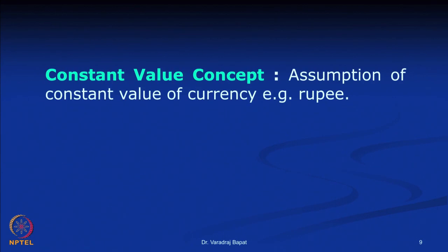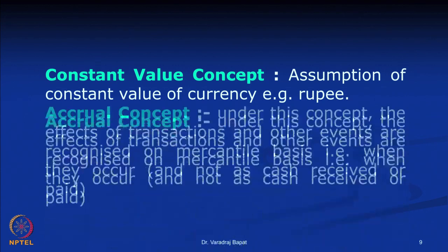Constant value concept — there is an assumption of constant value of currency. For example, with the rupee, we do not assume that its value is changing vis-à-vis foreign currency, and we do not record changes in the value of currency. The value of currency also changes because of inflation, but those are not business transactions. We record a transaction only when something happens with a third party; otherwise the value of currency is considered to be constant.